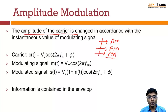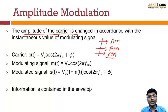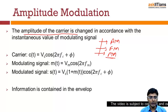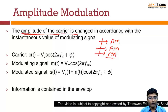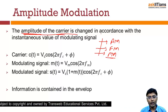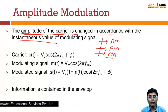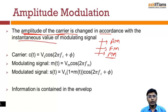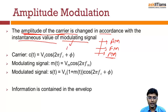In amplitude modulation, when we change the amplitude, change the frequency, or change the phase, we are changing the parameters of a carrier wave. The carrier is basically a high frequency signal. In the case of amplitude modulation, we are varying the amplitude of the carrier in accordance with the instantaneous value of the modulating signal.